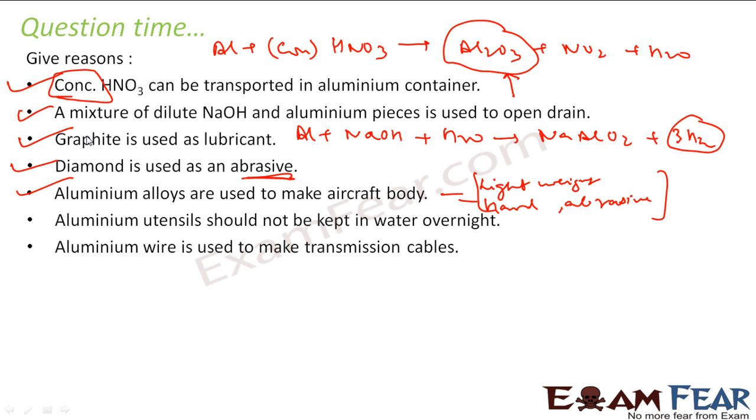Aluminum utensils should not be kept in water overnight because if you react aluminum with normal water and oxygen from the atmosphere, it forms Al2O3 and hydrogen gas. Since this hydrogen gas is exhausted, this reaction goes in the forward direction and all the aluminum dissolves in water. You have aluminum ions and these aluminum ions Al2O3 or Al3+ ions are very harmful to health. So we should not keep water and aluminum overnight because it is a very slow process but if we keep it for 10 hours in the night the reaction will happen.